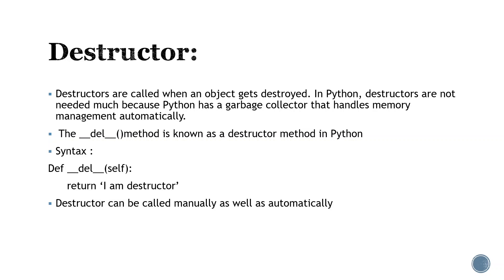Now let's see what destructors are. Destructors are used to destroy an object. Whenever you want to destroy an object you can call a destructor, although it is not required in Python because Python has a garbage collector that handles memory management automatically. The destructor method syntax is: def __del__(self), and then it can return anything.